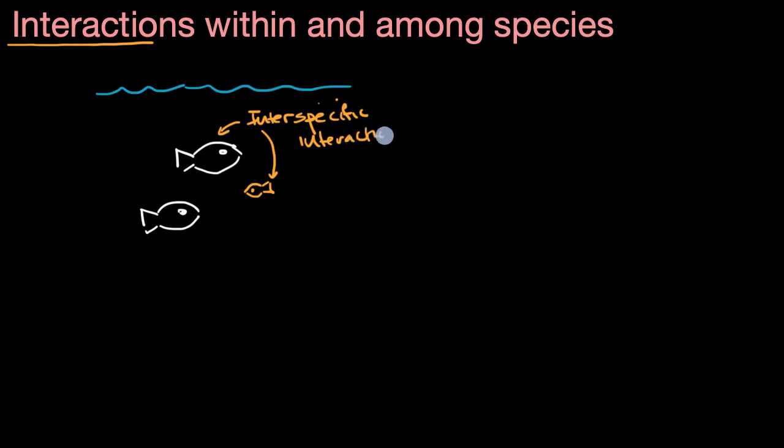This particular interaction we are seeing is one of predation. One species is using the other species for food. Now that's not the only type of interaction, just in this very simple picture. You could imagine there's only one little yellow fish here, and both of these white fish are hungry.